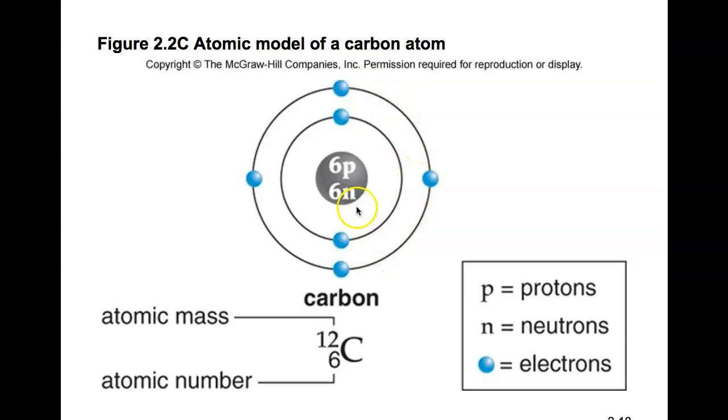Now, in the center of the atom, at its nucleus, we also have 6 neutrons. To determine the number of neutrons in the nucleus of the atom, you take the atomic mass and subtract the atomic number. So 12 minus 6 gives you 6 neutrons.